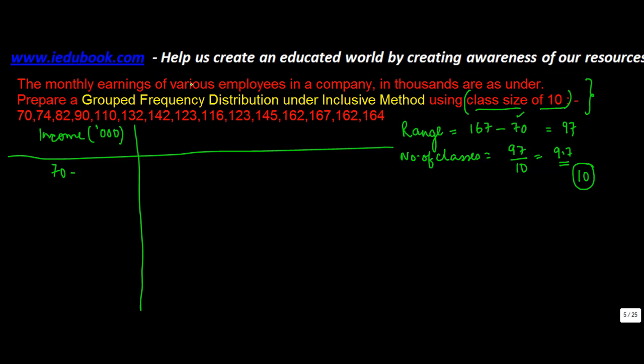In inclusive method, what happens is the last number is included. If you write 70 to 80, in that case 80 basically goes to the next one. So the last number which is included here is not 80, it is 79. So in an inclusive method, you just write 79. Then the next one is 80 to 89, 90...